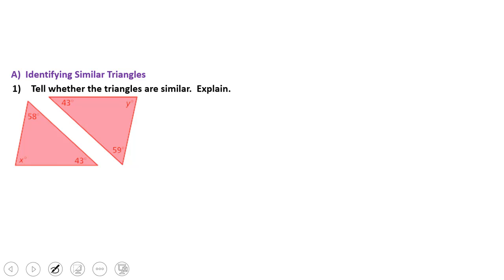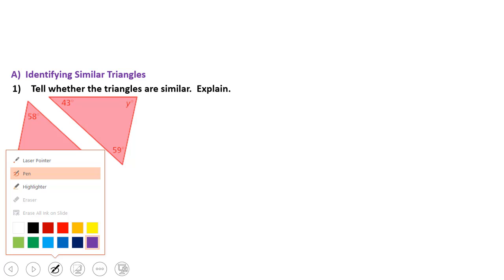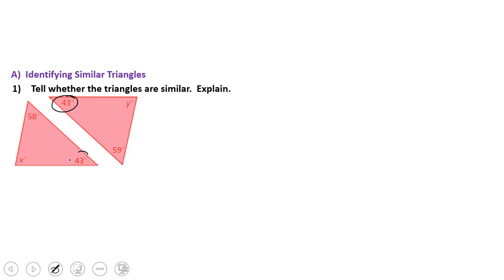All we're going to do is identify if, in fact, these triangles are similar or not. So here's what we do. We have to find two angles that are congruent. Because if two angles are congruent, we know the third one's congruent. Therefore, we know the triangles are similar. So we take a look at this right here and we recognize that we have angle 43. These are the same. We have one.